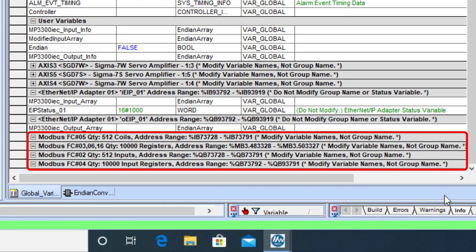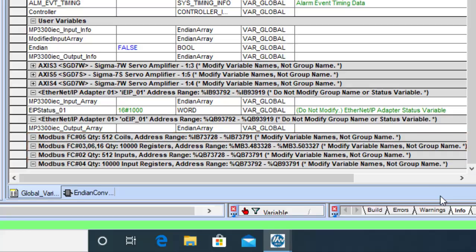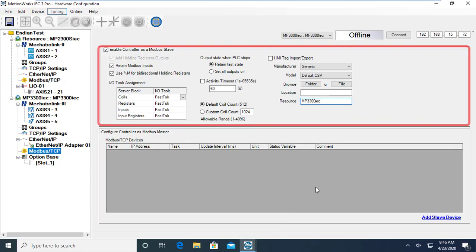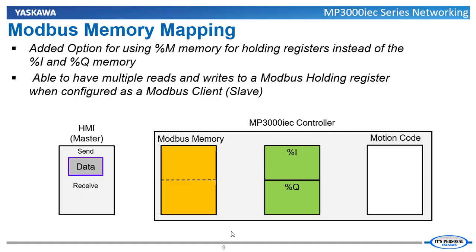Modbus data area sizes can be seen in the global variables worksheet after the motion controller is set to be a Modbus TCP slave in hardware configuration. An option is available in hardware configuration which allows the Modbus holding register data to be stored in the %M memory area on the MP3000 IEC series controllers. Using the %M memory for the holding registers allows any of the network devices to read from and write to the same memory address, which allows less memory to be used to hold the requested data.